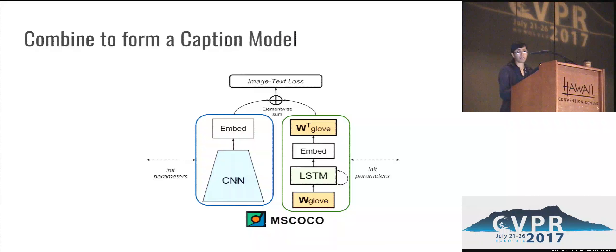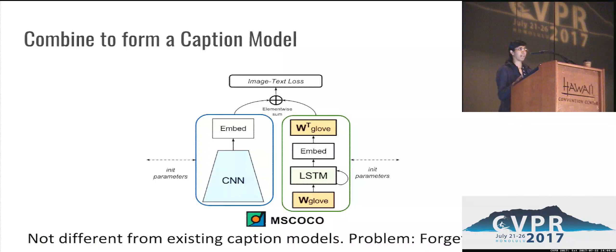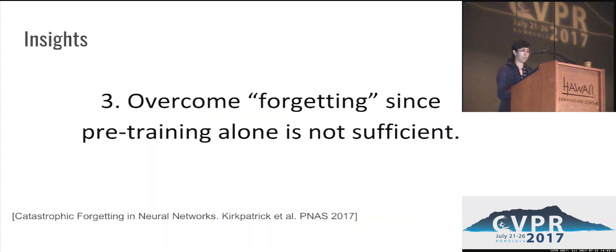We can combine our visual recognition network and our language model to form a caption model. One thing to note is that this model does not seem very different from existing image captioning models, which are also pre-trained on ImageNet images. But existing image caption models do not generate captions of ImageNet objects. One key problem is that these models are prone to forgetting — in the sense that although they've been pre-trained on ImageNet, once fine-tuned on the image caption dataset, they tend to forget what they've seen before. This has been observed by others, specifically Kirkpatrick et al. in PNAS 2017, who call this catastrophic forgetting in neural networks. We want to address and overcome this problem, since pre-training alone is not sufficient.